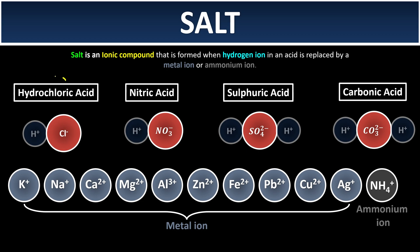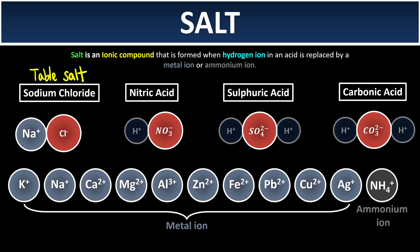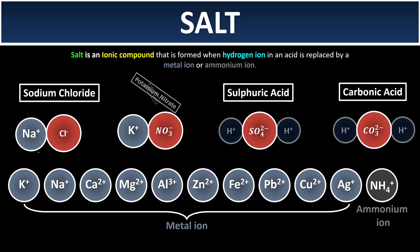Let's begin with hydrochloric acid. Remove the hydrogen ion and replace it with a metal ion. If we choose sodium ion, we get sodium chloride — our everyday table salt used as a food flavoring. But too much of it can cause high blood pressure or hypertension. Next, for nitric acid, remove the hydrogen ion and choose potassium ion, and we get potassium nitrate.